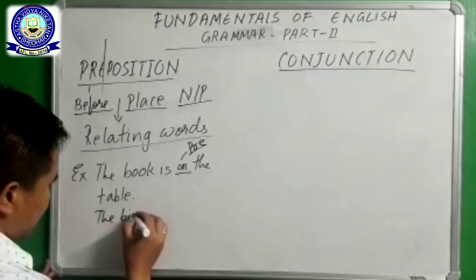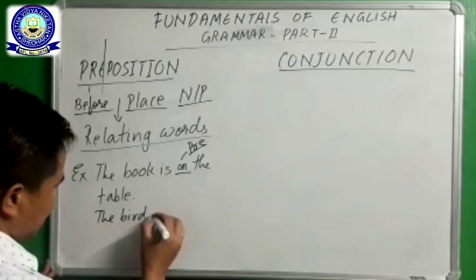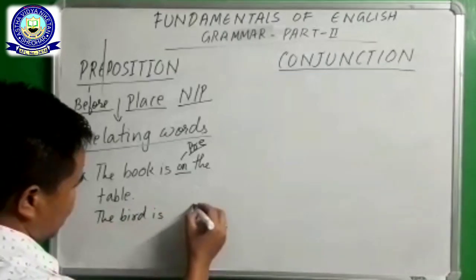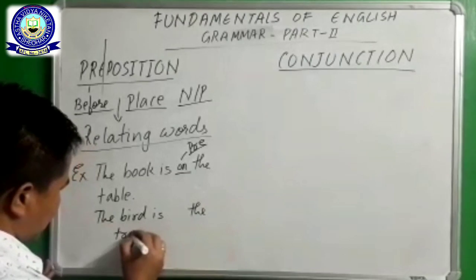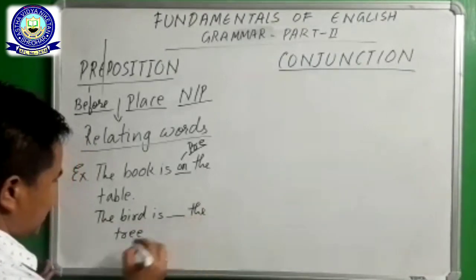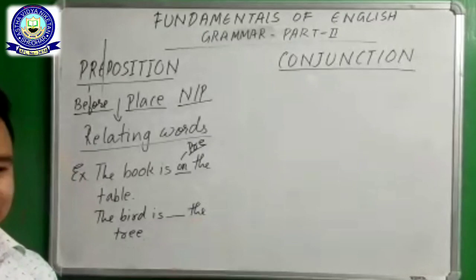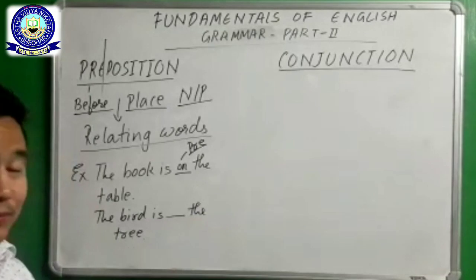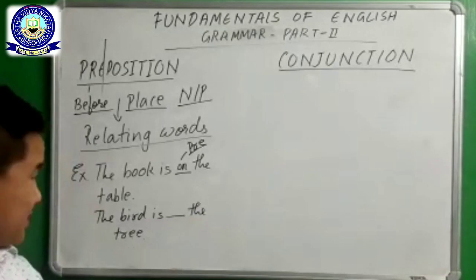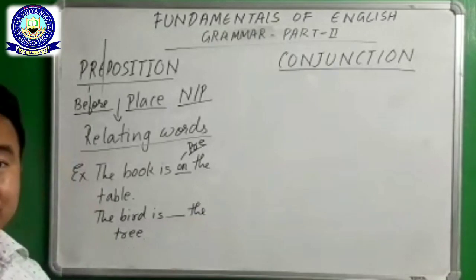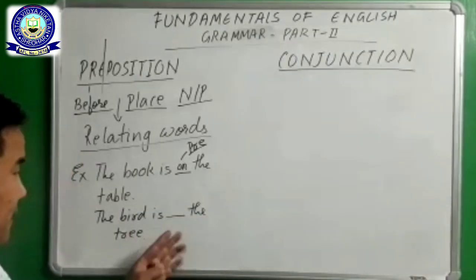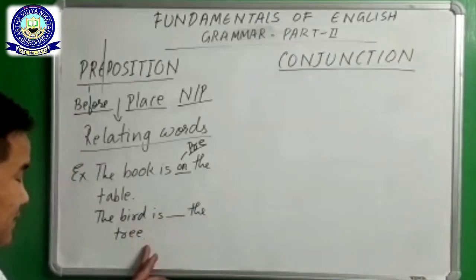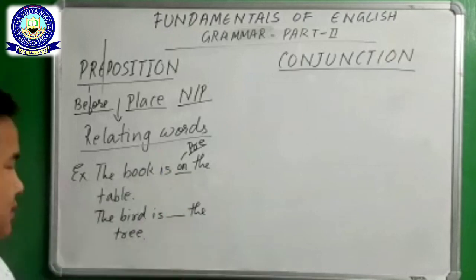Another example: if you see 'The bird is the tree,' can you see the bird is the tree? Because bird and tree are two different things. We cannot see that way because there is no relationship — no relation between them — because we are missing a preposition.